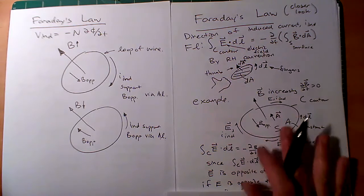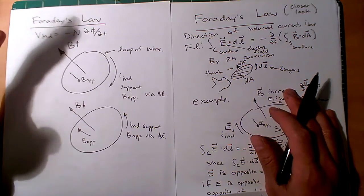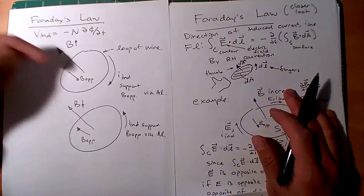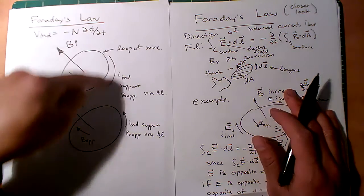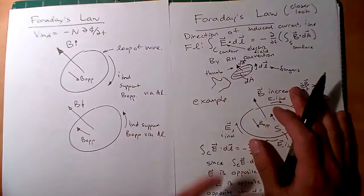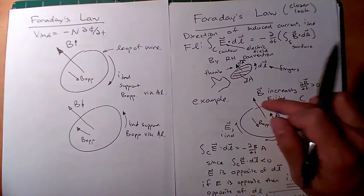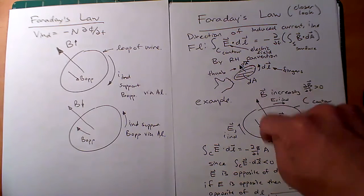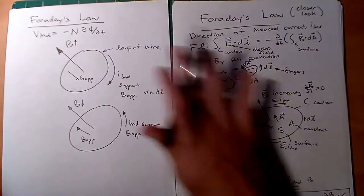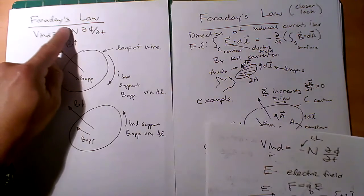The I induced opposes the dB/dt — if you have I induced going clockwise, you create a B-opposed in the opposite direction to fight that increasing B. Everything is consistent. I prefer the simpler approach: ignore the minus sign, recognize that if B is increasing there will be a B-opposed, and use Ampere's Law and the right-hand rule. We're going to be a little loose with that minus sign and mostly ignore it.